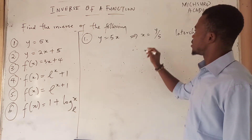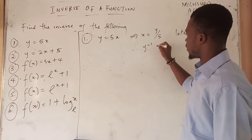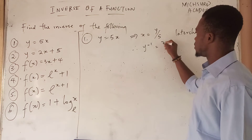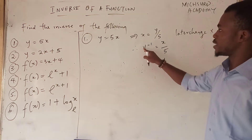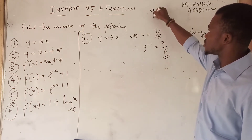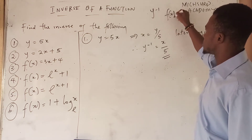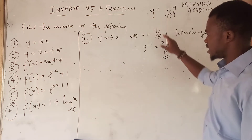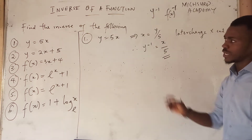So if we do that, then the inverse y⁻¹ will be equal to x over 5. When we are representing an inverse, we use this symbol. For some cases you can see it written as f⁻¹, and this means the inverse of the function. So that is the solution for the first one.